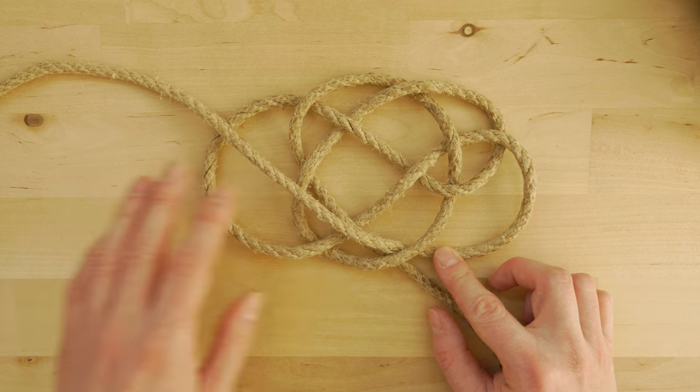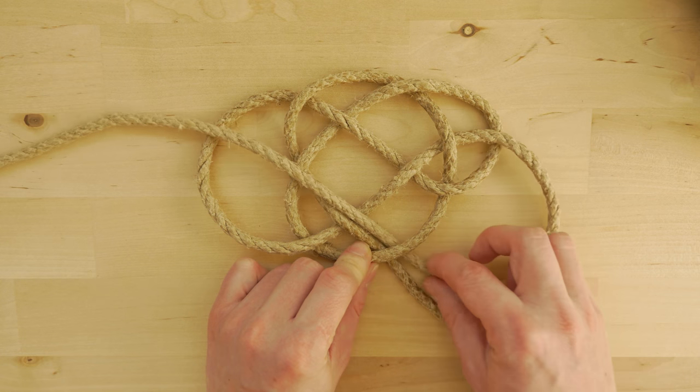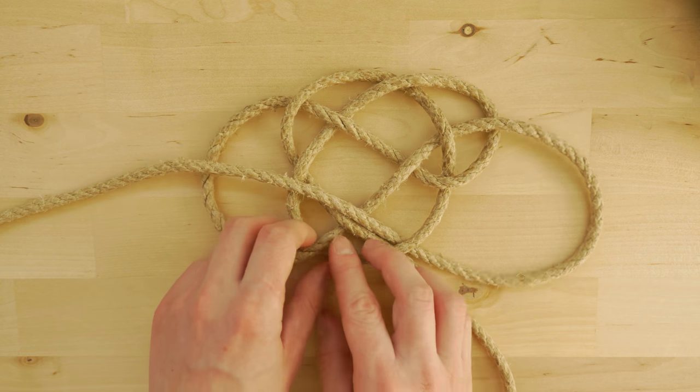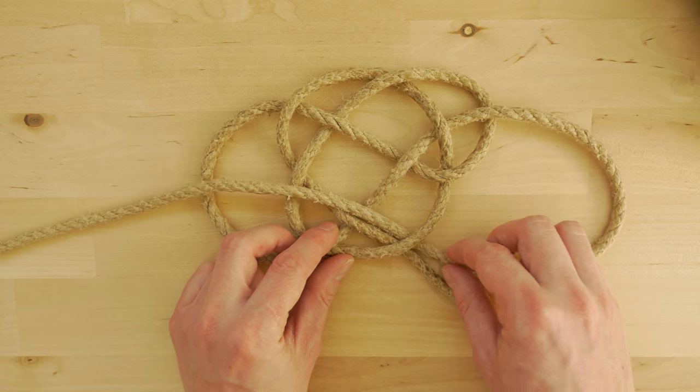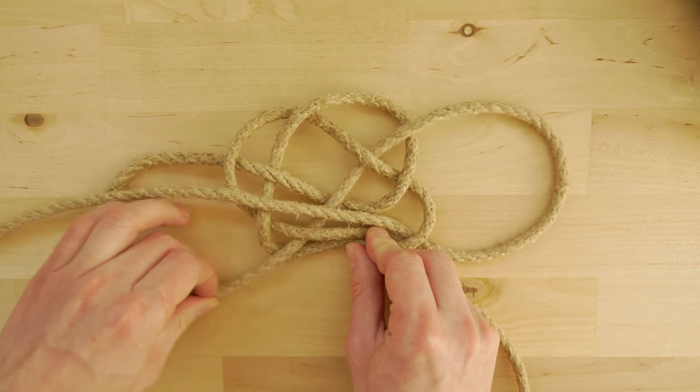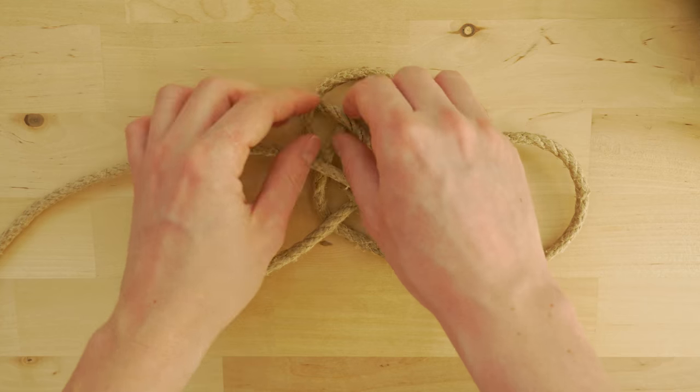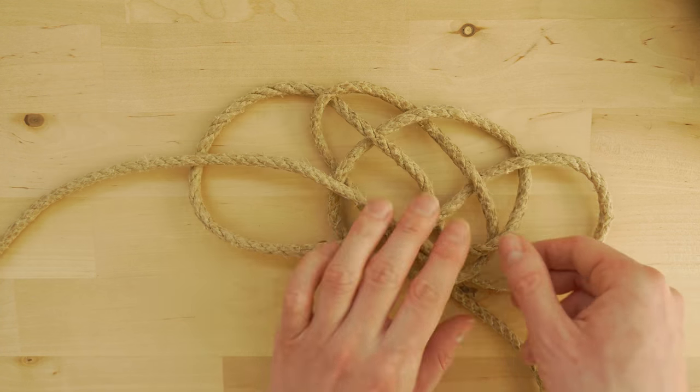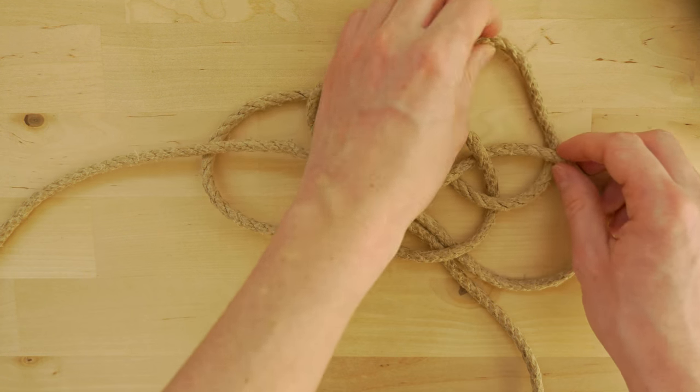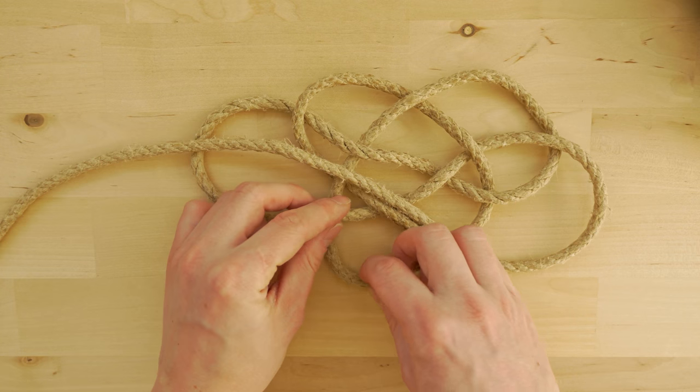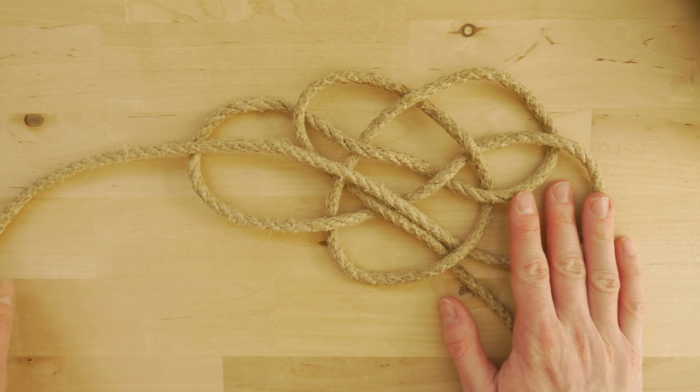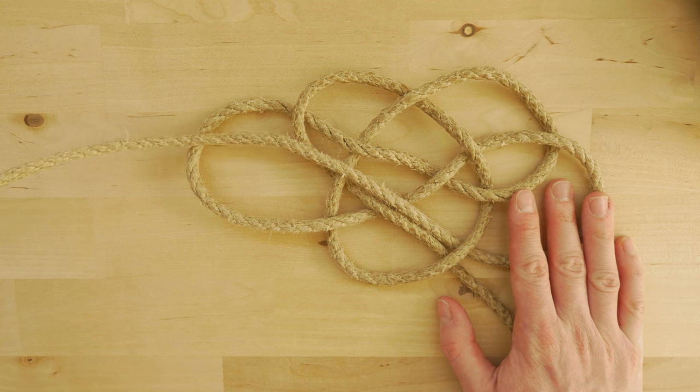Now the first thing that I would recommend is working in some slack into this knot. Basically pull out your working end a bit and then work in some extra rope, and this will get you some more slack, which will make your tying or actually doubling the knot a bit easier.